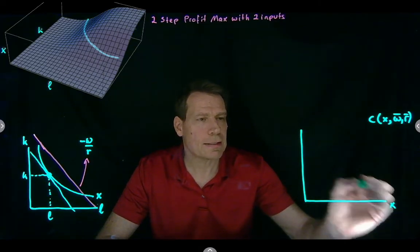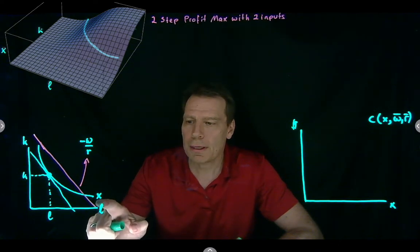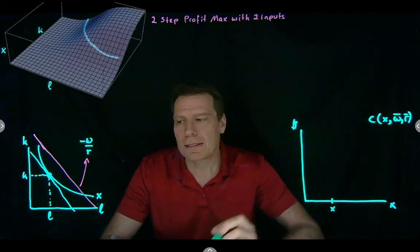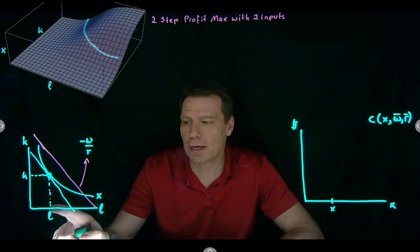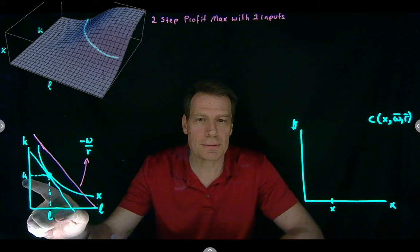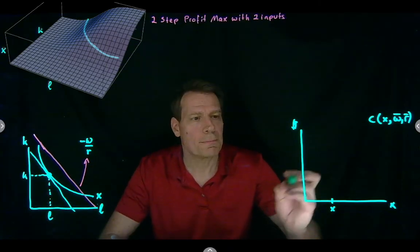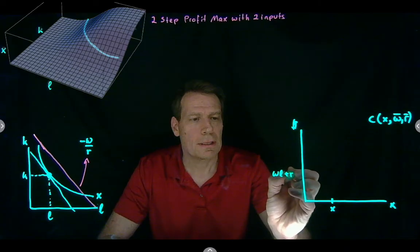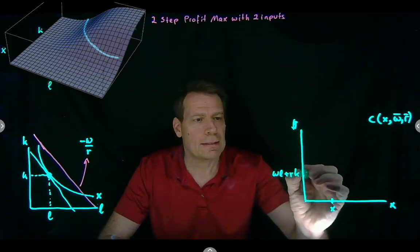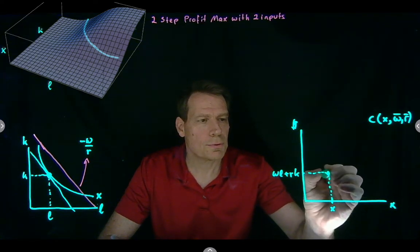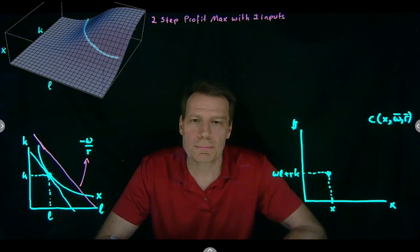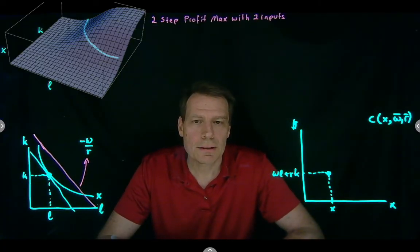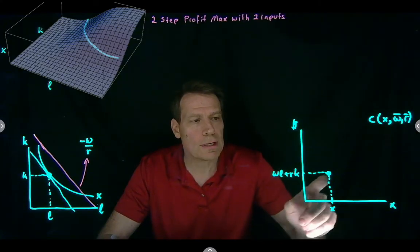We'll have output on the horizontal axis and dollars on the vertical axis. For this initial green level of x, the cost of producing that is going to be the wage times how much labor I hire, plus the rental rate times how much capital I hire. So all we have to do is multiply the amount of labor chosen by the wage, the amount of capital chosen by the rental rate, and add those up — that gives us the least cost of producing that much output. If we can do that for one level of output, we can do it for every level. Every level of output has an isoquant, and we can find that tangency for every isoquant and trace out what this cost function will look like.